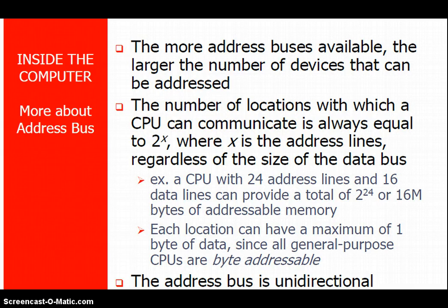The more address buses available, the larger the number of devices that can be addressed. The number of memory locations with which the CPU can communicate is always equal to 2 raised to X, where X is the number of address lines. For example, with 4 address lines you can connect 2^4 locations. Address buses are unidirectional — they can only assign.